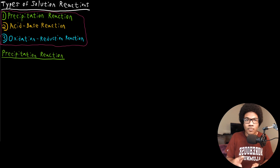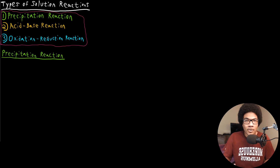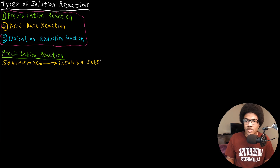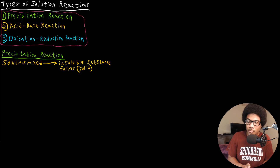Precipitation reactions are when you mix together two solutions and you end up with some insoluble substance — like an insoluble solid — that precipitates out of the solution. In precipitation reactions, you have solutions that are mixed, and when the reaction occurs, you end up with some insoluble substance forming. This is primarily a solid that forms out of combining two liquid solutions.